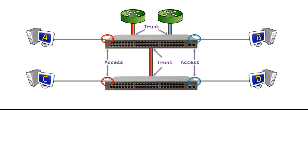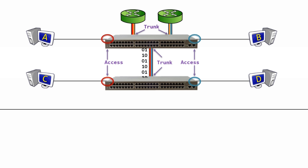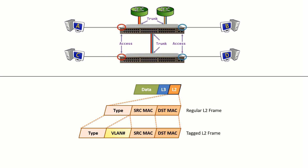Now, there is something else to consider. Traffic on the wire is simply a bunch of ones and zeros. If a bunch of ones and zeros arrive on a link from host C, the switch knows they all belong to VLAN 10, because access ports only carry traffic for one VLAN. But on trunk ports, it isn't as simple. If a bunch of ones and zeros arrived, something has to exist to designate which ones and zeros belong to VLAN 10 and which belong to VLAN 30. That something is what we know as a VLAN tag.